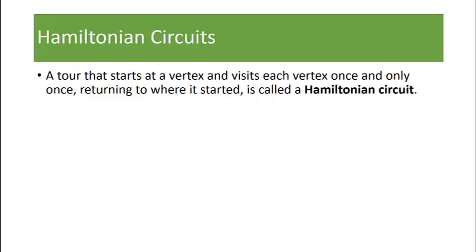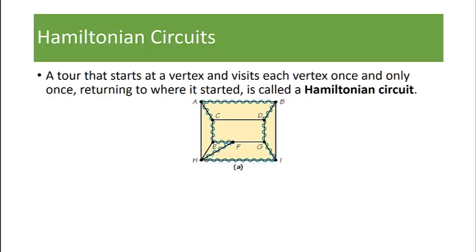For a quick recap, a tour that starts at a vertex and visits each vertex once and only once, returning to where it started, is called a Hamiltonian circuit and you see one on the graph here.